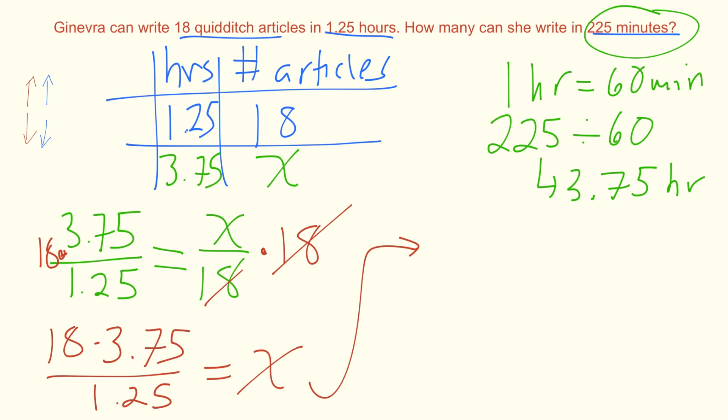Now typing into your calculator 18 times 3.75 gives us 67.5 over 1.25 equals X. Last step type it into your calculator and you'll find that X is equal to 54. So that means that in 225 minutes Ginevra can write 54 Quidditch articles.